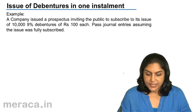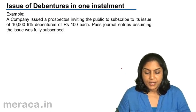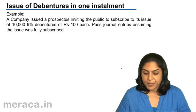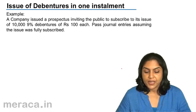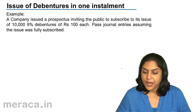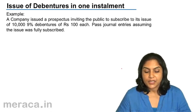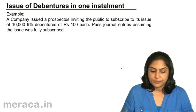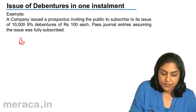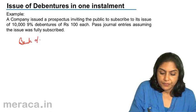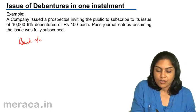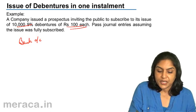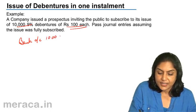Let us consider an example. A company issued a prospectus inviting the public to subscribe to its issue of 10,000 9% debentures of Rs.100 each. Pass journal entries assuming that the issue was fully subscribed. On receipt of money: Bank account debit 10,000 debentures into Rs.100, that is 10 lakhs.